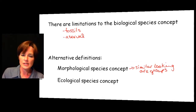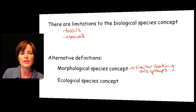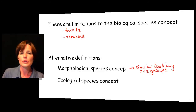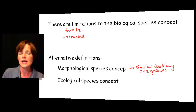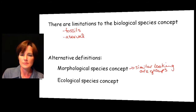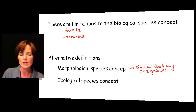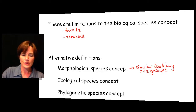The ecological species concept talks about what organisms actually do or what their habitat is. If they perform similar roles in the environment, have similar niches, similar food sources — these types of things — then we can group them together as a species. Again, it's a little subjective, and we can't use this when we're talking about fossils, so it's not perfect.